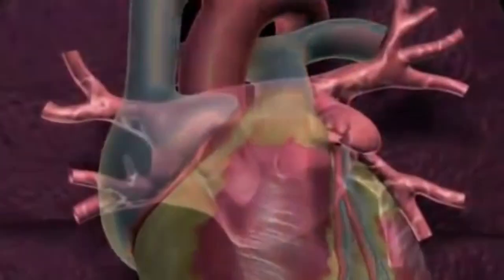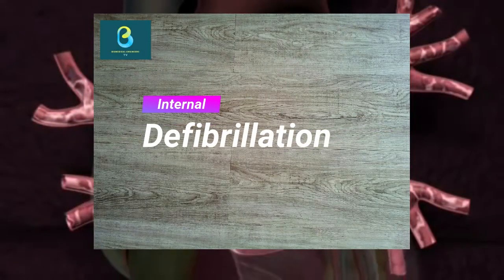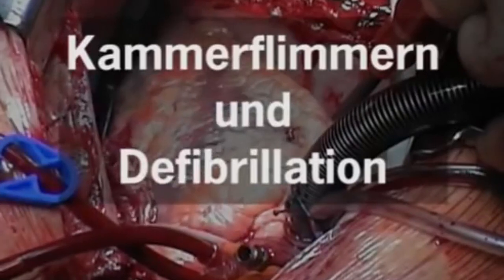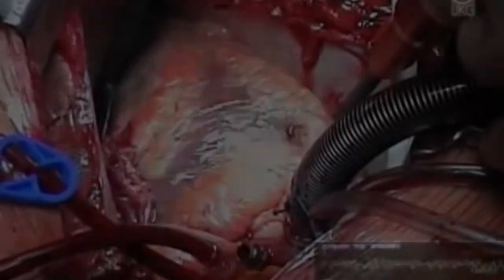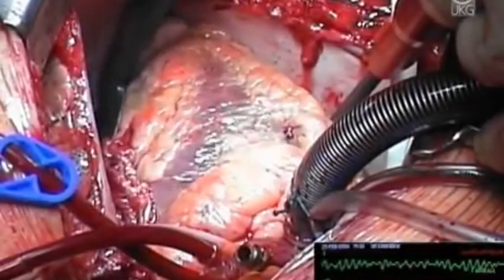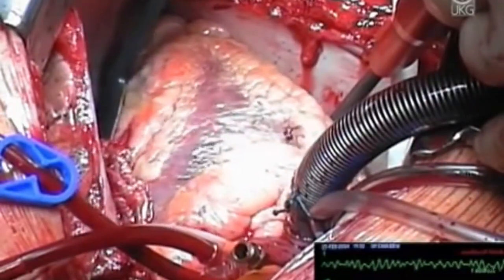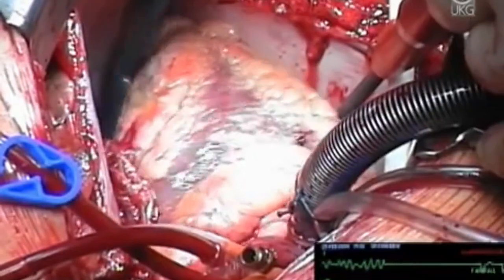There is also one more internal defibrillation technique, known as the internal defibrillator. This is often used to defibrillate the heart during or after cardiac surgery, such as a heart bypass. The electrodes consist of round metal plates that come in direct contact with the myocardium.